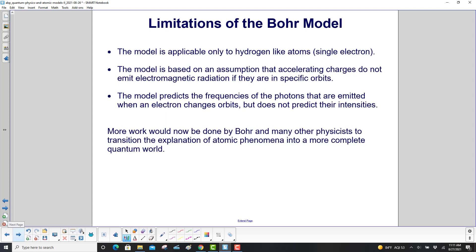Limitations of the Bohr model. The model is applicable only to hydrogen-like atoms, atoms with a single electron. The model is based on an assumption that accelerating charges do not emit electromagnetic radiation if they are in specific orbits. And three, the model predicts the frequency of the photons that are emitted when an electron changes orbits, but does not predict their intensities. More work would now be done by Bohr and many other physicists to transition the explanation of atomic phenomena into a more complete quantum world.